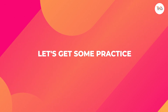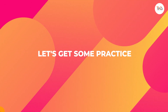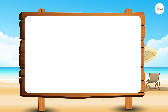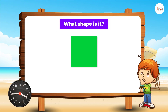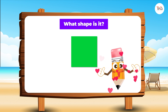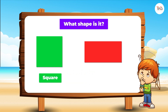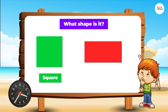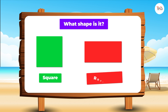Right, now let's get some practice. What shape is it? Correct, it's a square. What shape is it? Right, it's a rectangle.